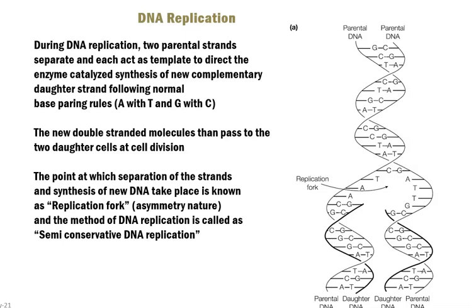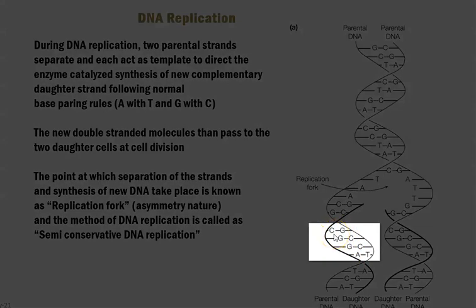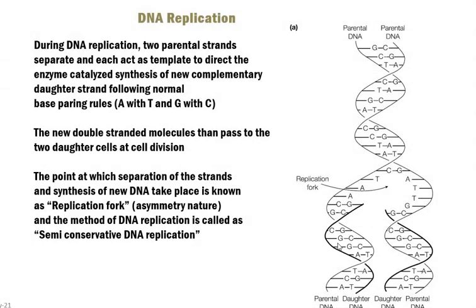Each separated strand acts as a template to direct the enzyme-catalyzed synthesis of a complementary daughter strand following the normal base pairing rules. Each strand serves as a template on which a new strand is built, as seen in the dark black color new strand formed by the DNA polymerase enzyme. For example, if G is present in the parental strand, then in the daughter strand it will automatically be C, and vice versa — this normal base pairing rule is fully adopted during the process of replication.